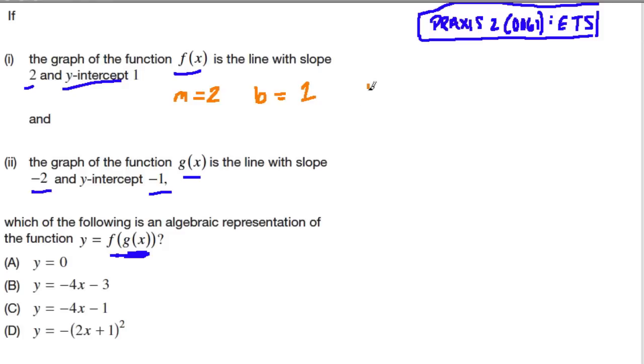One of the forms of a linear function is y equals mx plus b. You might also have to deal with y minus y1 equals, this is the point slope formula, m times x minus x1. But here we're dealing with this right here.